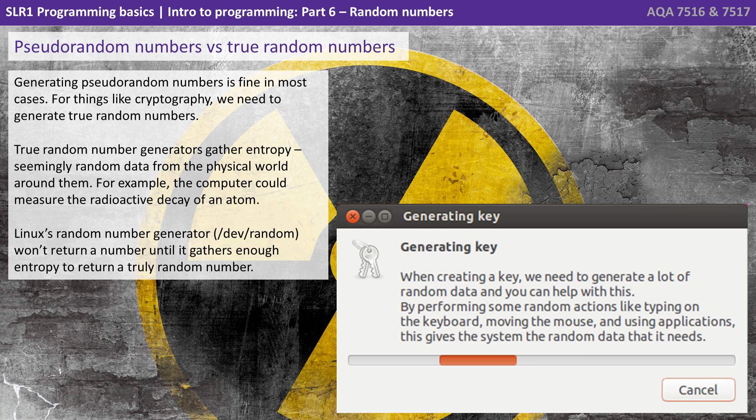Generating pseudo-random numbers is fine in most cases. For things like cryptography, we need to generate true random numbers. True random number generators gather what we call entropy, seemingly random data from the physical world around them.